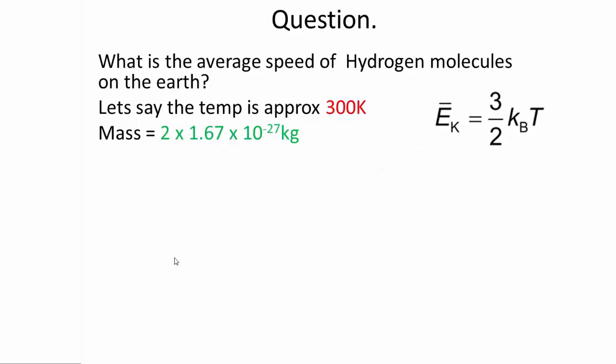We use this equation. So let's substitute those values in. 3 over 2 times the Boltzmann constant, times by 300. And we end up with 6.21 times 10 to the negative 21 joules.